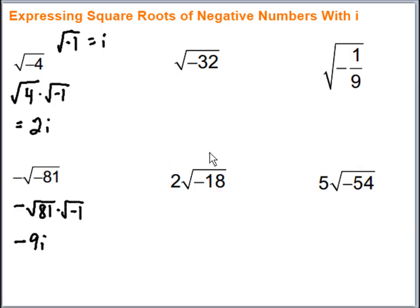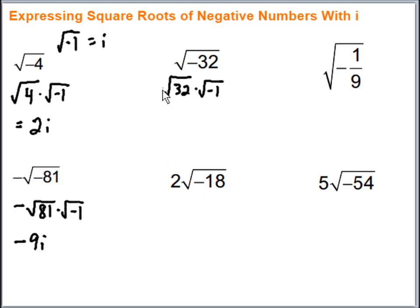For this example, I'll do it in two steps. First, I pull out the square root of negative 1, which is the i piece. Then I focus on finding perfect square factors of 32, since 32 is not a perfect square. The perfect squares are 4, 9, 16, 25, 36, 49, and so on — the biggest one that goes into 32 is 16. So I break it up into the square root of 16 times the square root of 2 times the square root of negative 1.